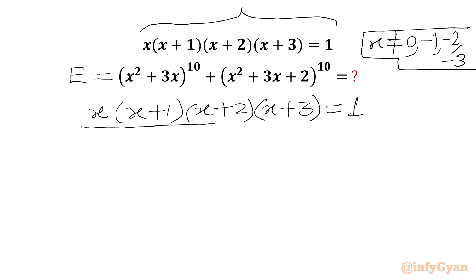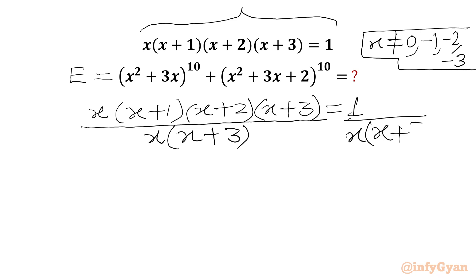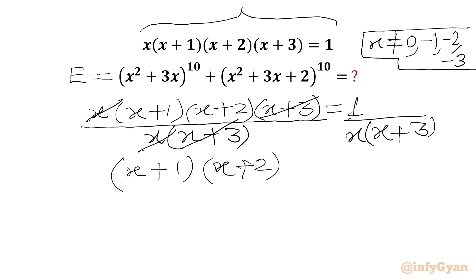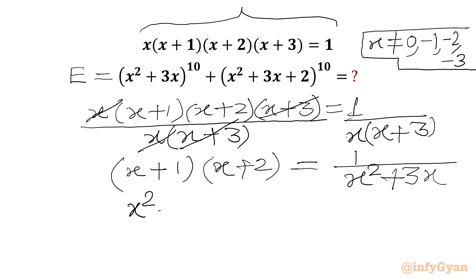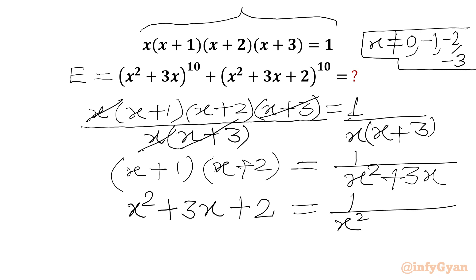Now we will divide our equation by x(x+3) on both sides. We cancel x with x and (x+3) with (x+3), giving (x+1)(x+2) = 1/(x(x+3)). Multiplying out the RHS: x·x = x², x·3 = 3x, so the denominator is x² + 3x. Expanding the LHS: x² + 3x + 2. So x² + 3x + 2 = 1/(x² + 3x).